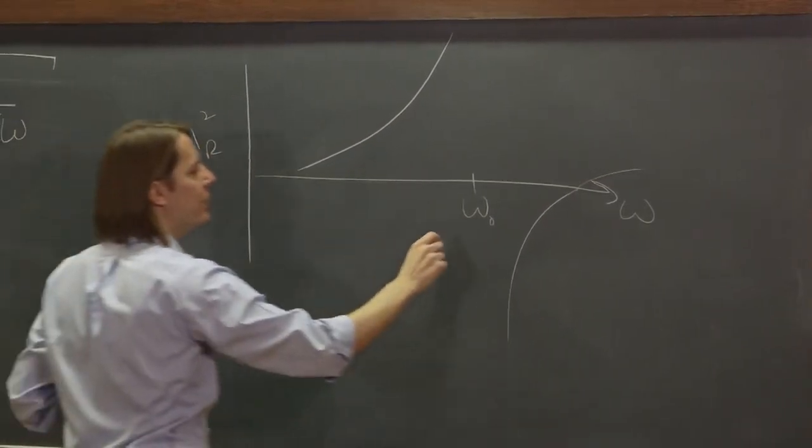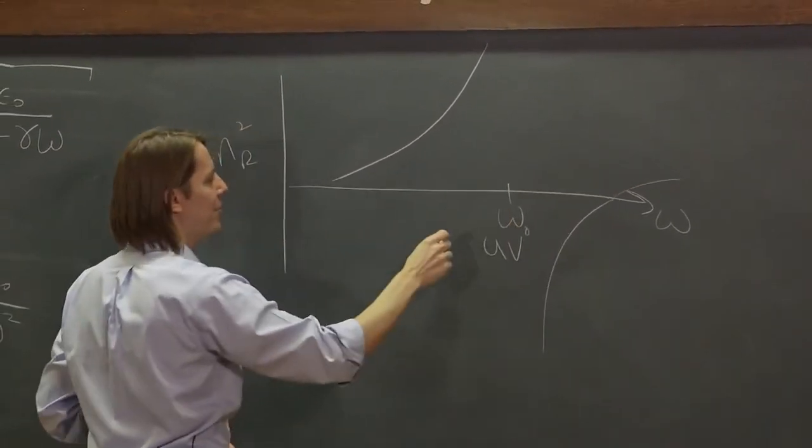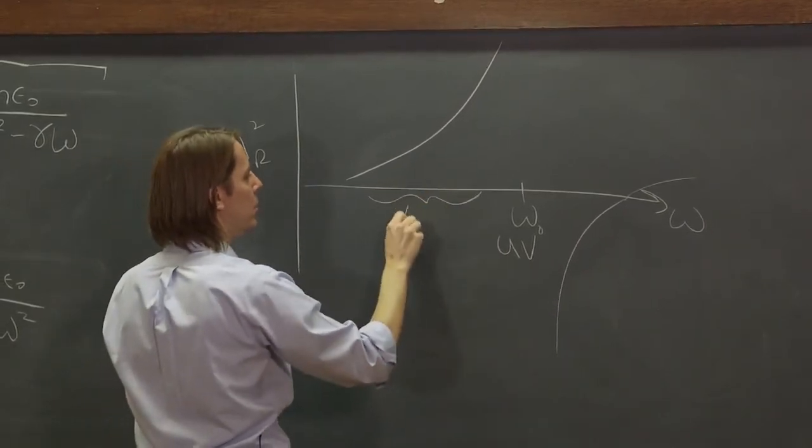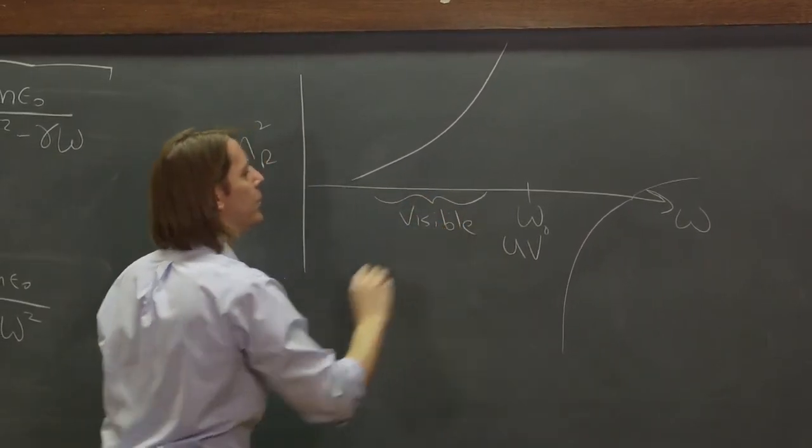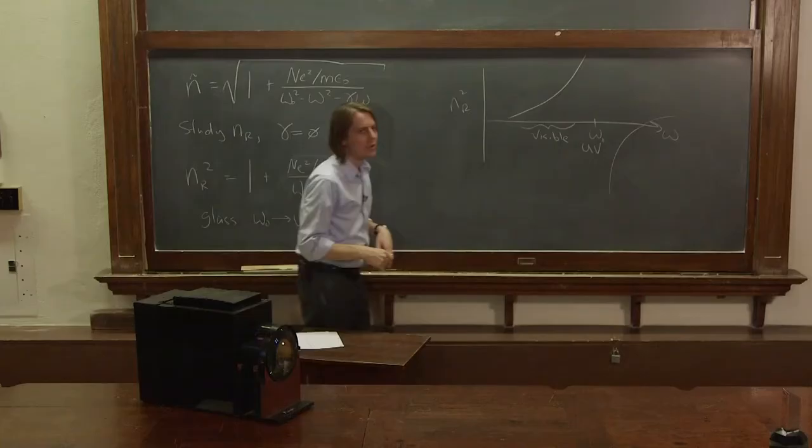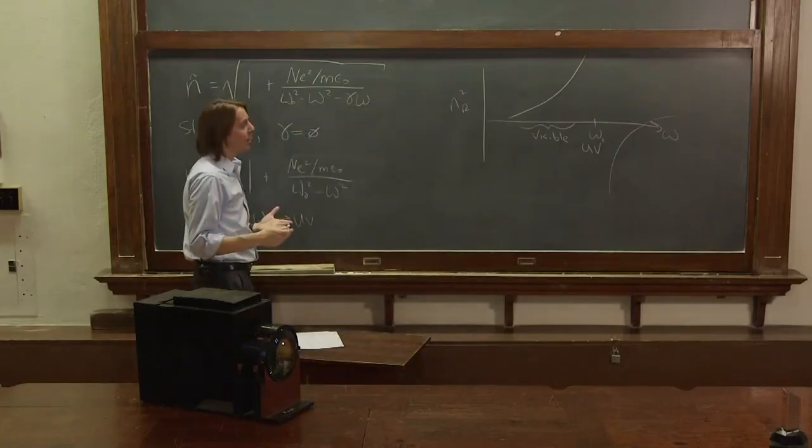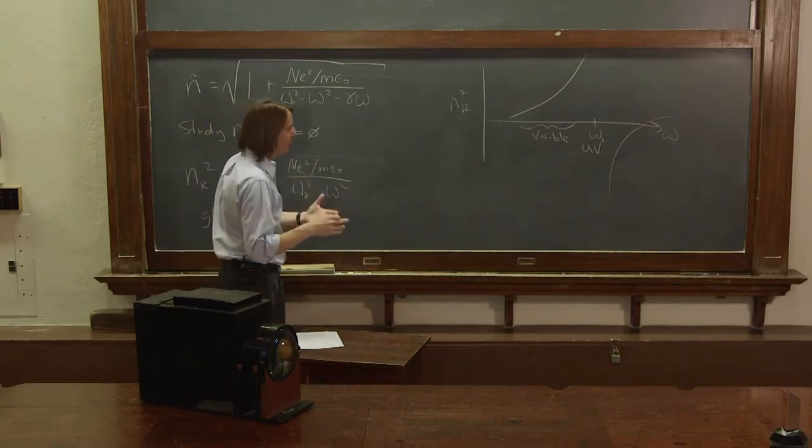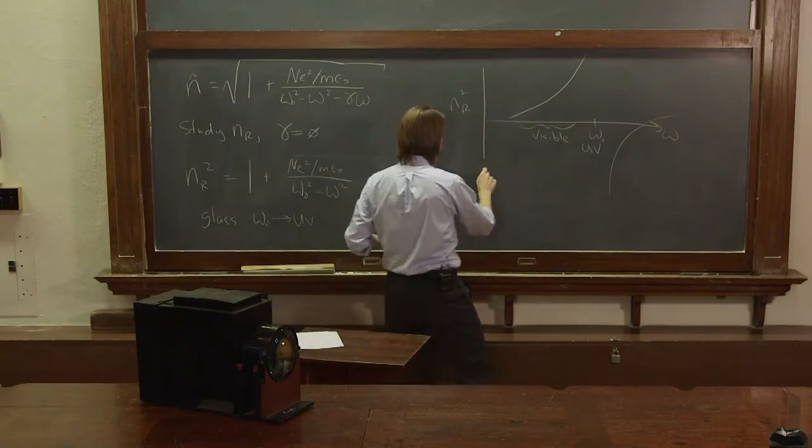But we just care about this because here's the UV, that resonance happens in the UV, and lower frequencies would be the visible. That actually matches what we know about glass, because the reason glass makes these rainbows is because we have dispersion in the real part.